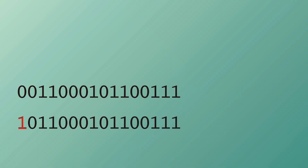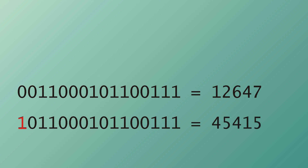Another problem arises when, due to accidents or damaged data carriers, individual bits are wrong. At first glance, this is not too bad. But be careful — if a single bit is flipped in a 16-bit number, a value of 12,647 can become 45,415: a completely different value. If a pixel of a picture gets the wrong color, it's not dramatic — but a computer program could crash because the processor receives a wrong instruction.